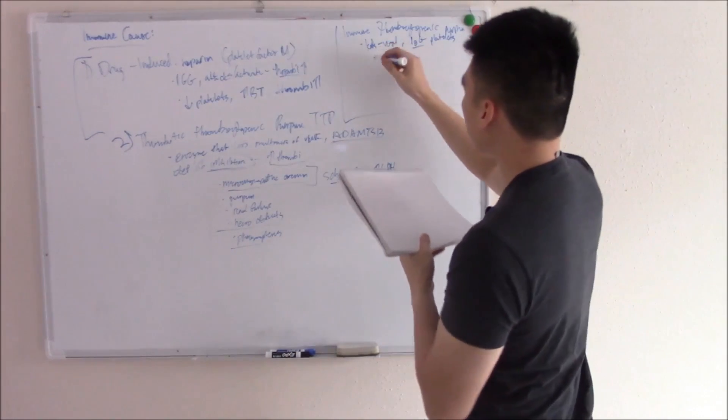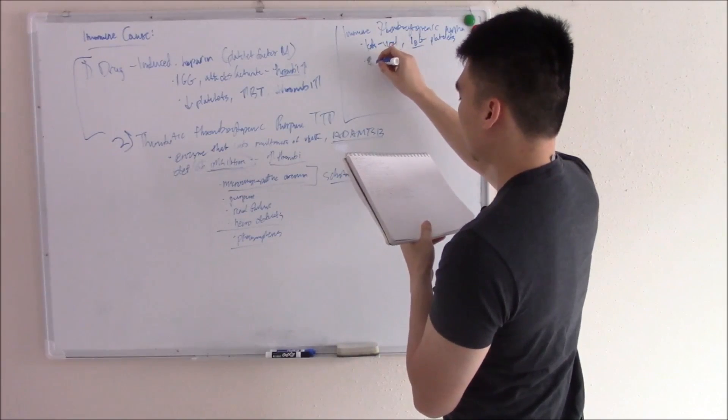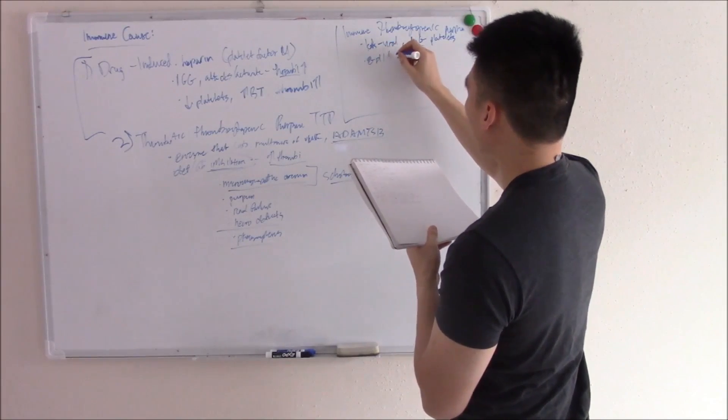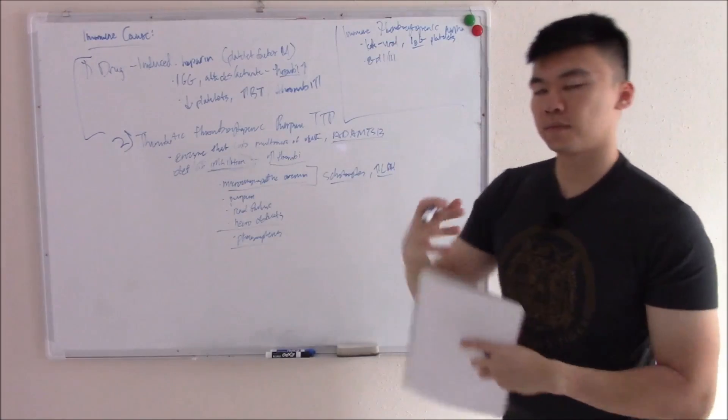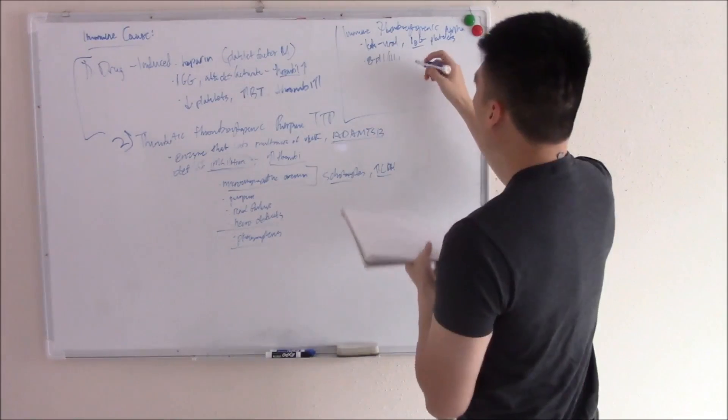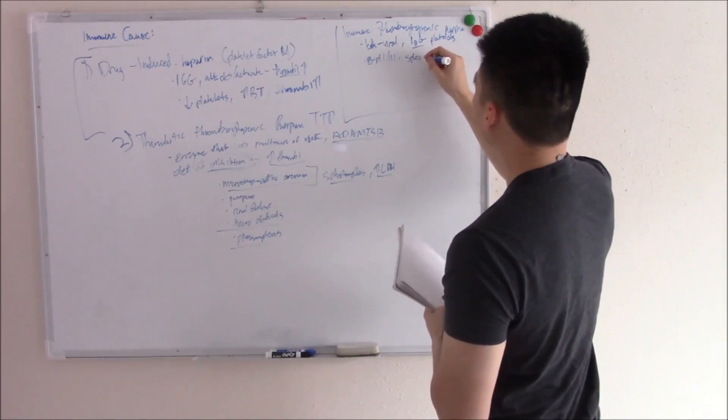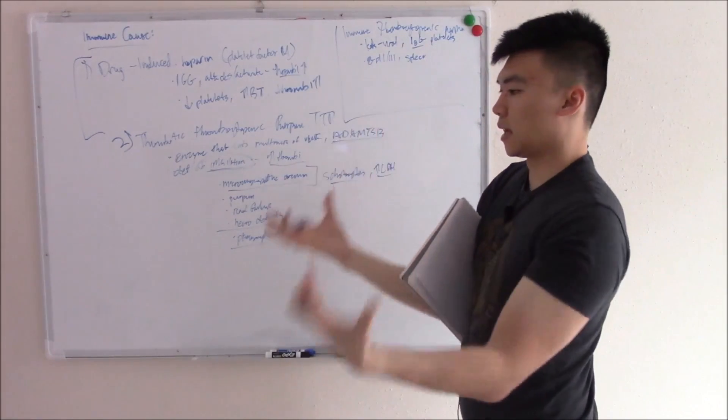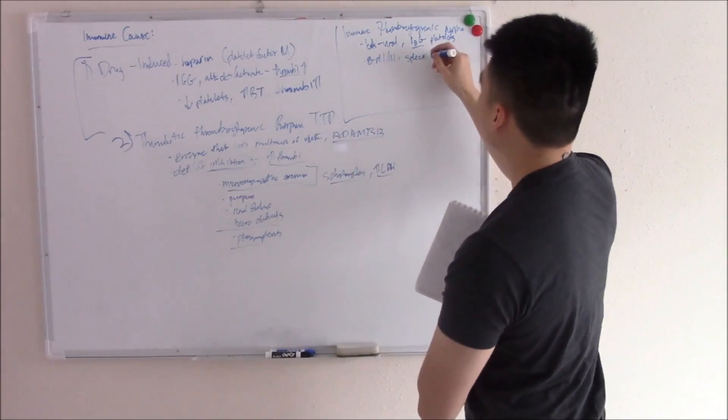So it makes these antibodies, especially IgG against your platelets. In particular, it's against GP2 and 3. Do you recall what those did? That's the one that bound fibrinogen, yeah? And when your spleen sees this, it sees platelets just covered by these antibodies. They know, remove it, remove those platelets. So spleen removes platelets.